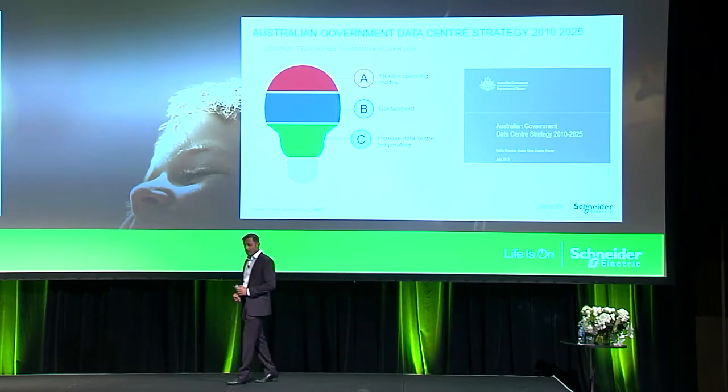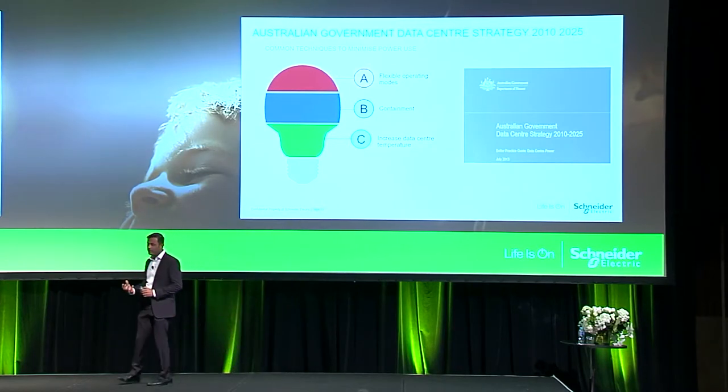Looking at current energy consumption and future load on data centers, the Australian Government Data Center Strategy put together a white paper to make existing and future data centers more efficient. Three key topics for cooling efficiency: first, have a flexible operating mode — where the cooling solution has the ability to use 100% outside air, also referred to as free cooling, or part outside air to offset mechanical cooling, thereby reducing compressor power consumption.